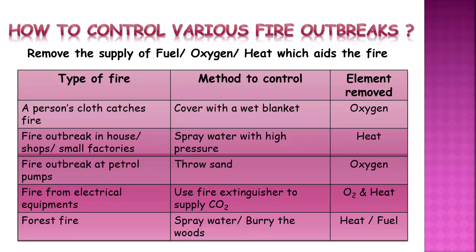Now let's look at various fire outbreaks and the methods to control them. There are three major factors that contribute towards combustion: fuel, oxygen, and heat. By removing or eliminating these factors, we can bring down the amount of combustion. The first instance is a person's cloth catching fire — cover that person with a wet blanket, which cuts down the contact of oxygen with the cloth, so it stops burning.